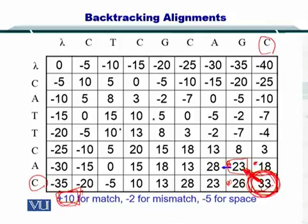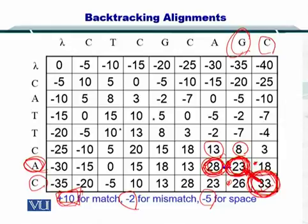Next, this G does not match with an A here. So the mismatch is minus two. So 13 minus two would have been 11 and here 28 minus five was 23. And here eight minus five would have been three. So this is the position which was the maximum. And therefore we will connect it like that in the traceback.